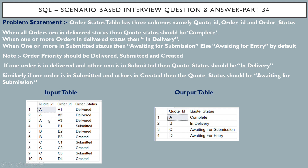The first requirement says: when all the orders are in delivered status, then cart status should be 'complete'. If you see the input table for cart ID A, we have three different order IDs, and all three have order status as delivered, so we have cart status as 'complete'.